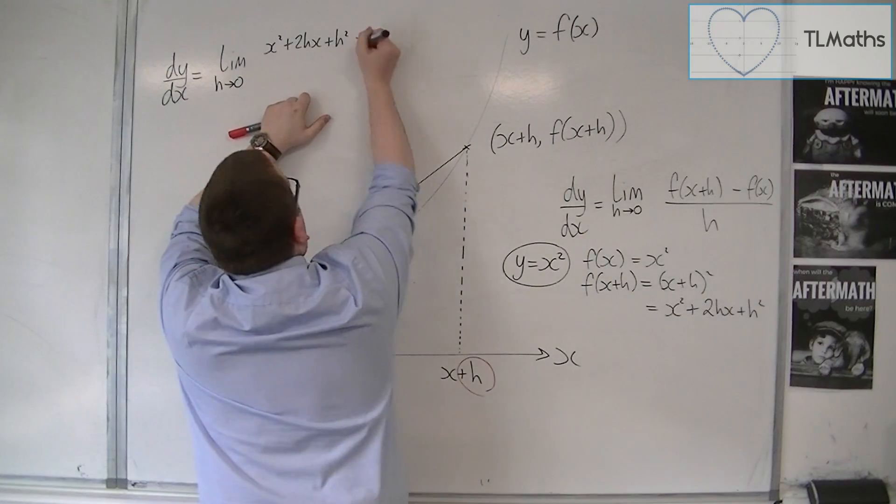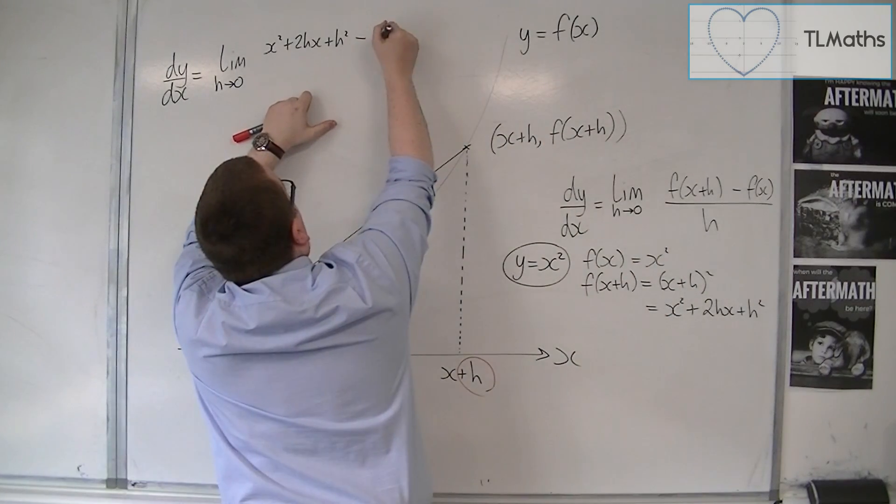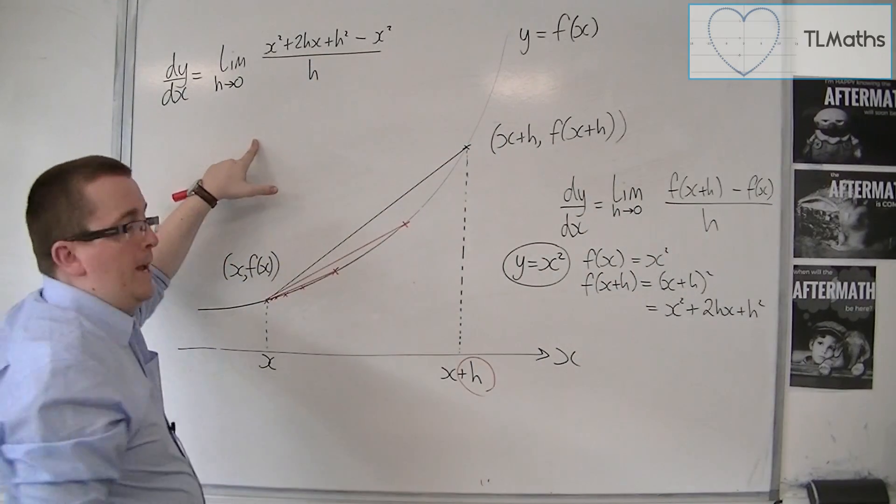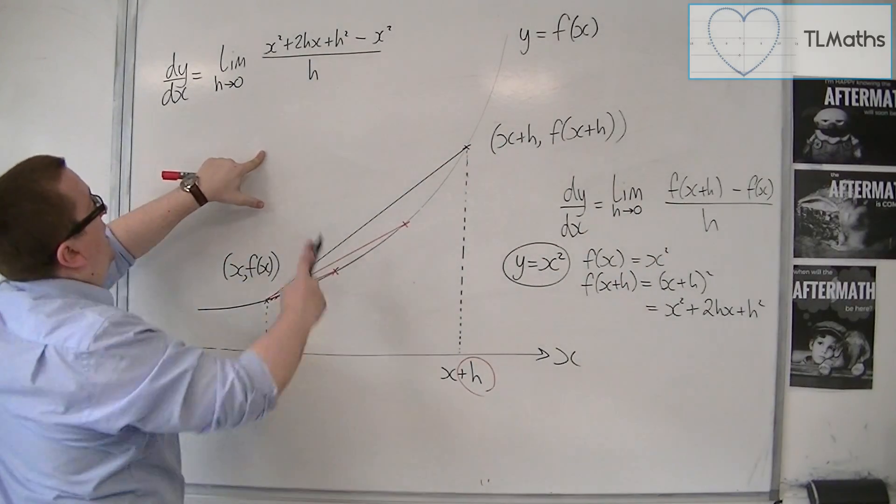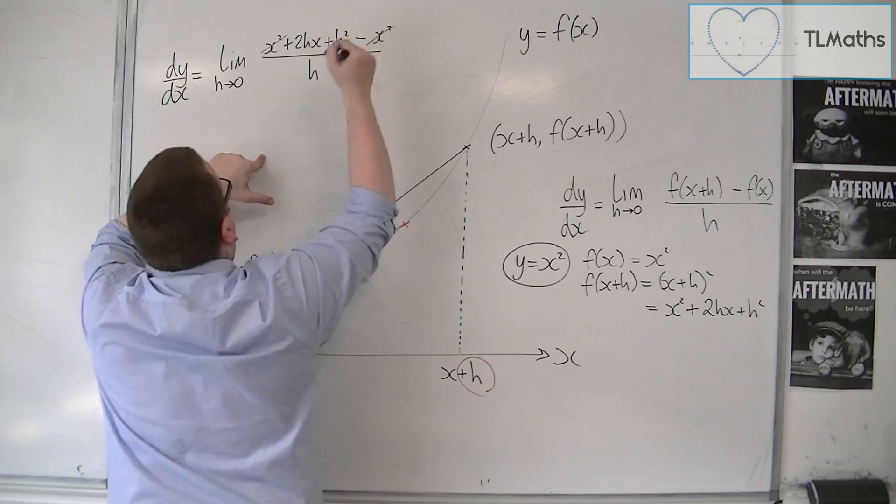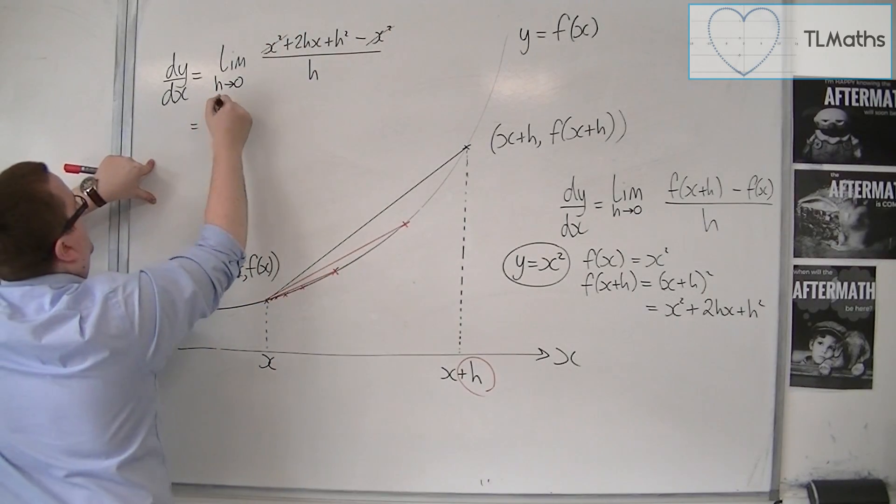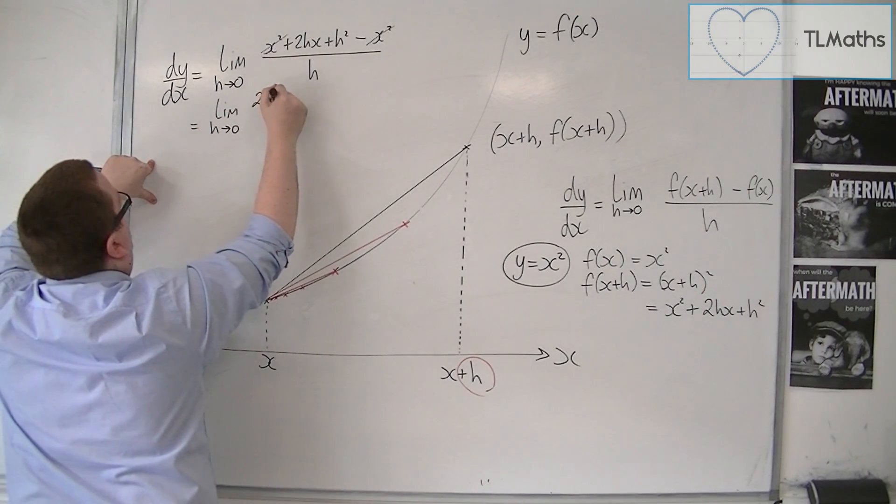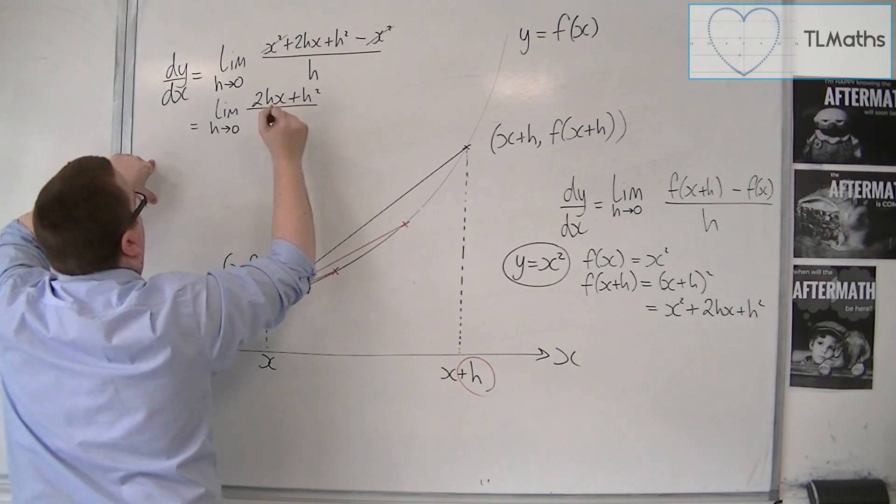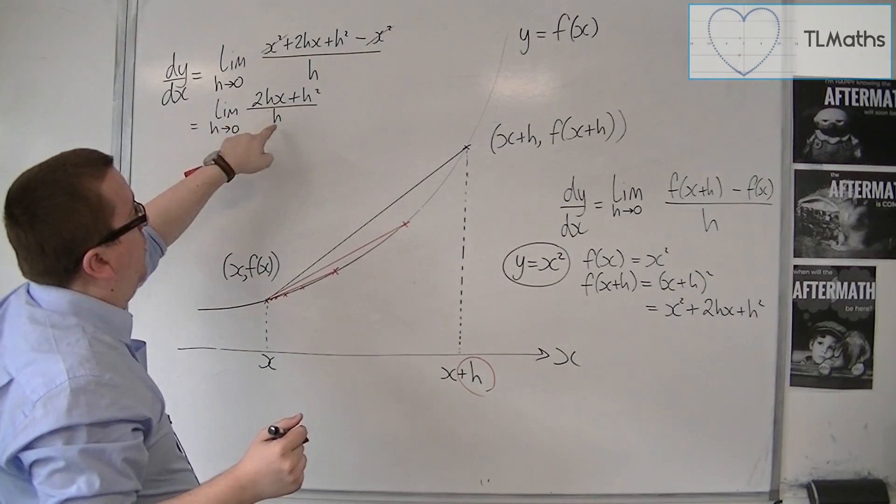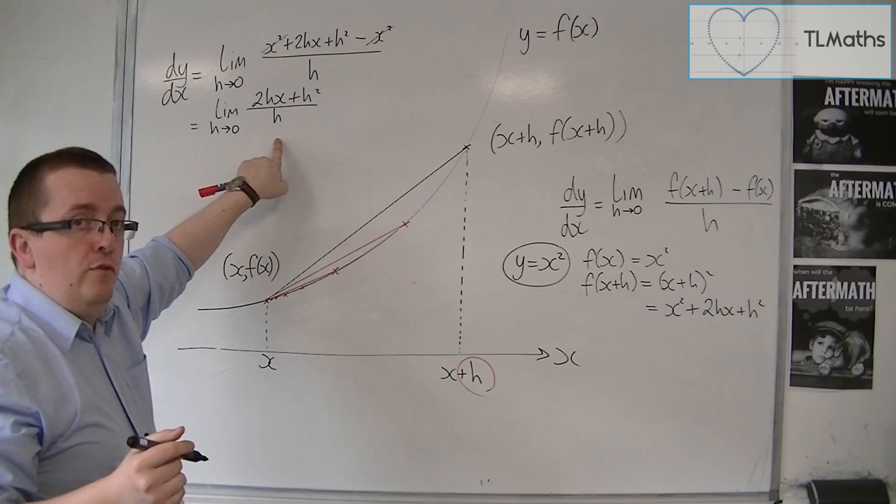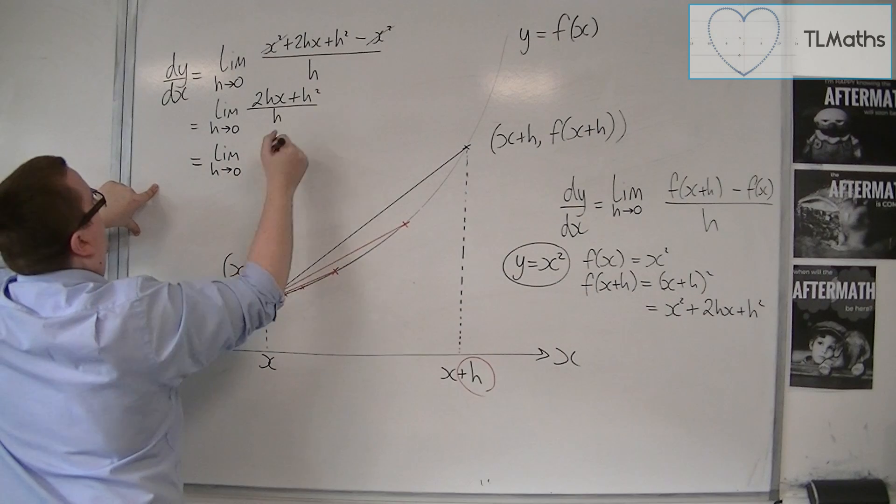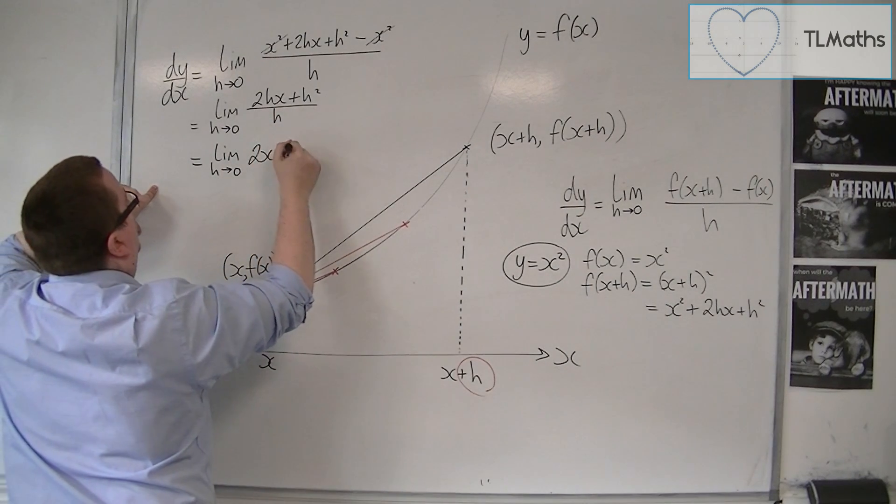Take away f of x, which is x squared, all over h. Now, the x squareds here are going to cancel. And what I can also see there is that I'm going to be left with 2hx plus h squared over h. Now, what I can then do is cancel through by the h. So, I get left with 2x plus h.